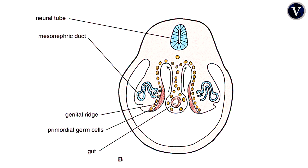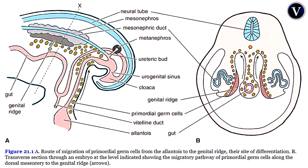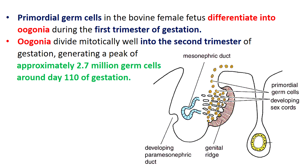Primordial germ cells in the bovine female fetus differentiate into oogonia during the first trimester of gestation. Oogonia divide mitotically well into the second trimester of gestation, generating a peak of approximately 2.7 million germ cells around day 110 of gestation. That is all for today — hope you all the best of luck, don't forget to like, share, and comment. Thank you.